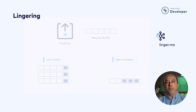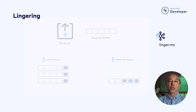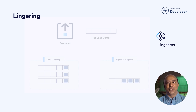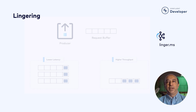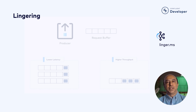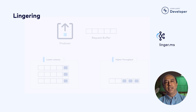In Kafka, the primary tool for working with batching is a setting called linger.ms. The longer one lingers, the more messages one might be able to pack into a request, but the longer the delay to get messages there. There is another setting called batch size, but we will not look at that for now. We will run a few tests to see what happens as we vary linger.ms while exploring monitoring. I doubt anyone will be surprised with the results, but I expect everyone will learn something interesting along the way.